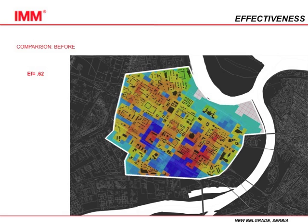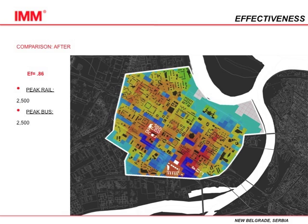For comparison, before any intervention, we see the clash of highly effective and potential areas right next to each other — this is what was taken advantage of in this project. The white buildings are the buildings added in these areas after the master plan. We added peak rail times and peak rail bus, and our effectiveness rate becomes 0.86.